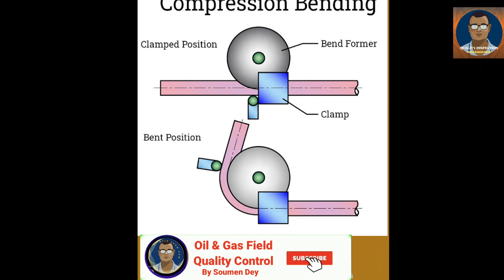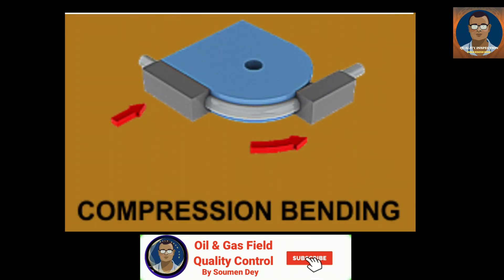Compression bending, also called press bending, is typically composed of the following components: bend die, clamp die, pressure die, and wiper die. The bend die is the main part that applies pressure on the pipe specimen to mold it. The clamp die supports the specimen and keeps it in place, while the wiper die is responsible for preventing defects on the material as the process is ongoing.